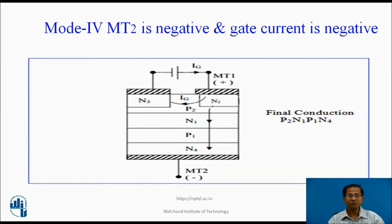Mode 4: MT2 is negative, gate current is negative. P2-N1 is forward biased, P1-N4 is forward biased, and P1-N1 is reverse biased. N3 injects a large number of charge carriers into P2, causing P1-N1 to become more forward biased. Current flows through P2, N1, P1, N4. In this mode, the Triac is more sensitive to gate current, so this mode is recommended for operation.